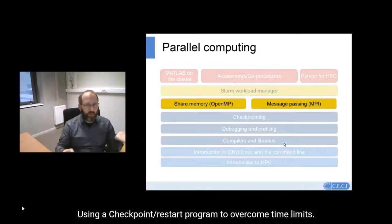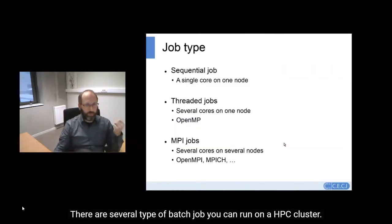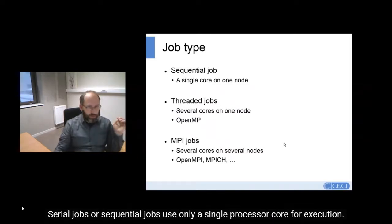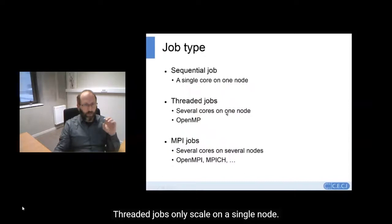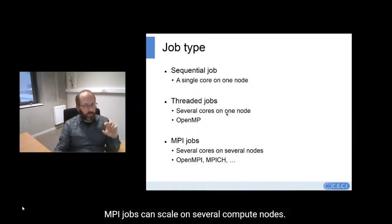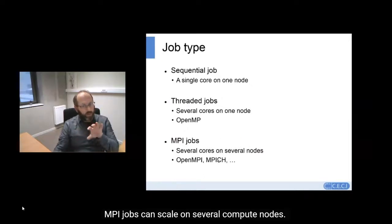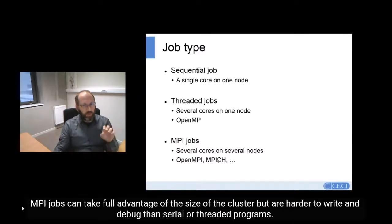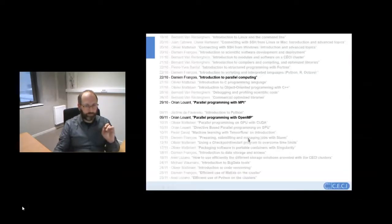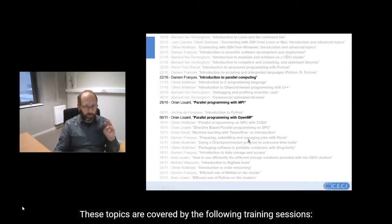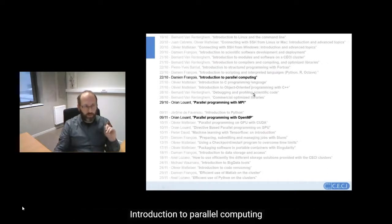There are several types of batch jobs you can run on an HPC cluster. Serial or sequential jobs can only use a single process or core for execution. Threaded jobs and OpenMP jobs only scale on a single node. MPI jobs can scale on several compute nodes and can take full advantage of the size of a cluster, but they are quite hard to write and debug compared to serial programs. These topics are covered by the following training sessions: introduction to parallel computing, programming with MPI, and programming with OpenMP.